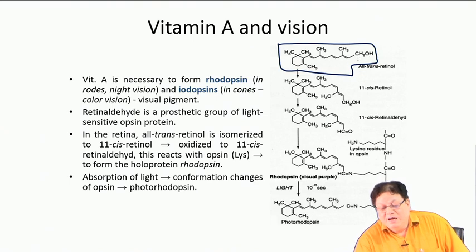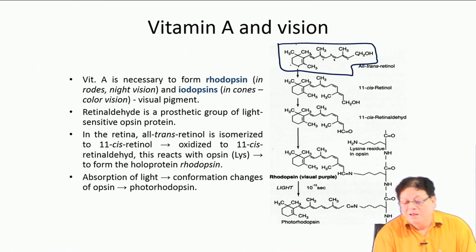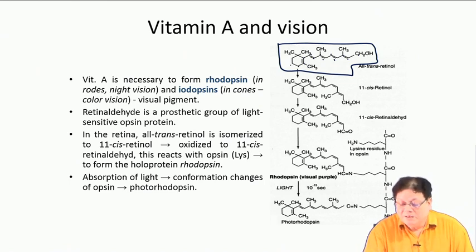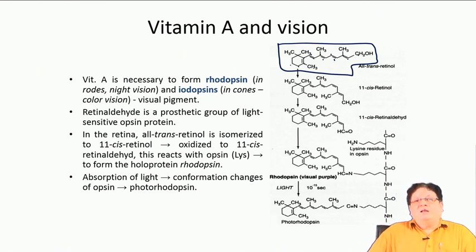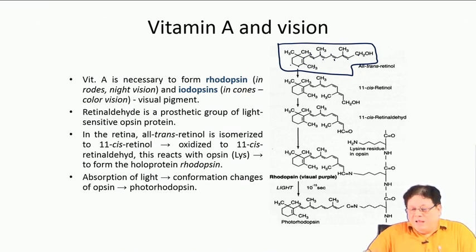Counting the carbon atoms: 1, 2, 3, 4, 5, 6, 7, 8, 9, 10, 11, 12, 13, 14, 15, 16, 17, 18, 19, and 20. So these 20 carbons mean it is a diterpene, derived from terpene biosynthesis.